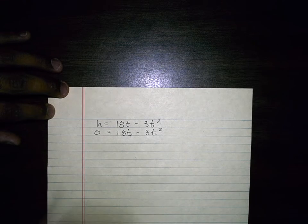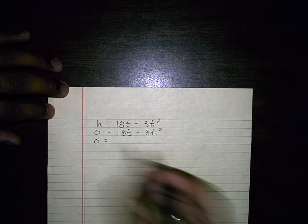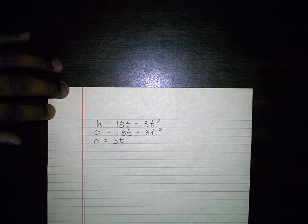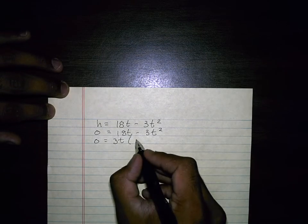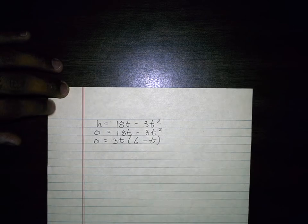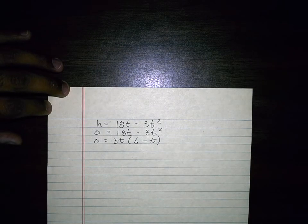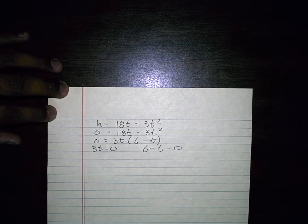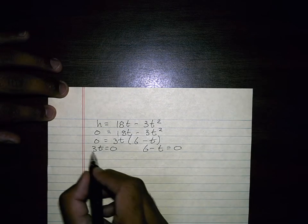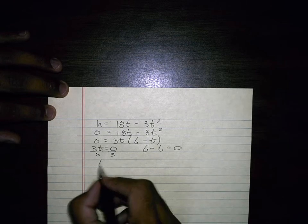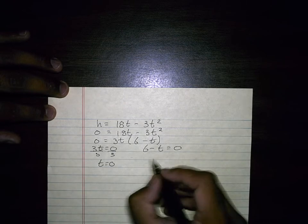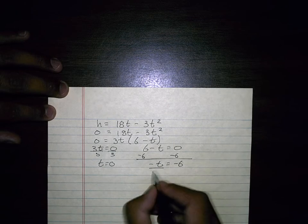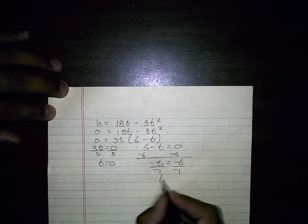So I have to factor and set the factors equal to 0. So I get, in this case, all I got is a difference of squares, which is 3t. And that leaves me with 6 minus t. So I say 3t equals 0 and 6 minus t equals 0. Divide both sides by 3 and t equals 0. Subtract 6 to both sides, divide by negative 1, and t equals 6.